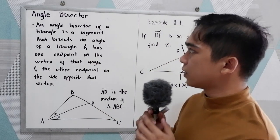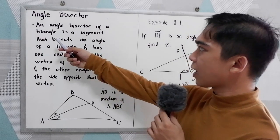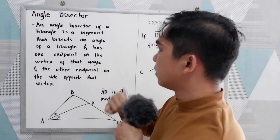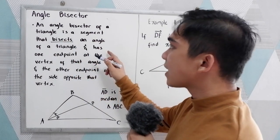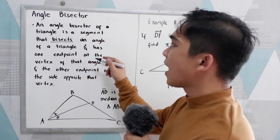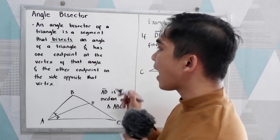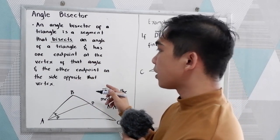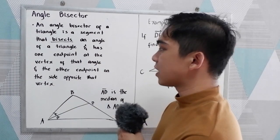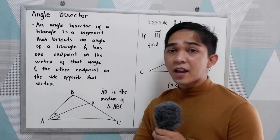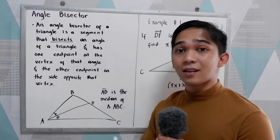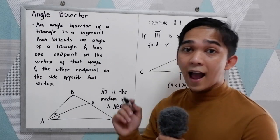By definition, an angle bisector of a triangle is a segment that bisects an angle of a triangle and has one endpoint at the vertex of that angle and the other endpoint on the side opposite that vertex. Simply put, an angle bisector bisects the angle into two congruent angles.